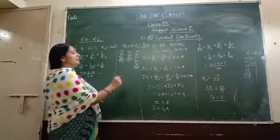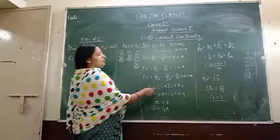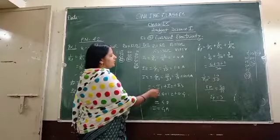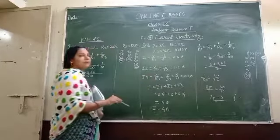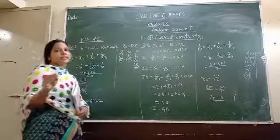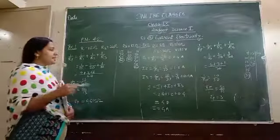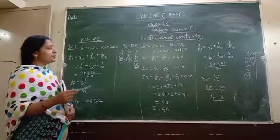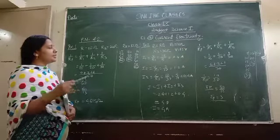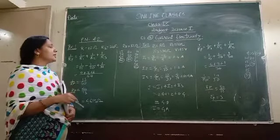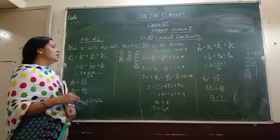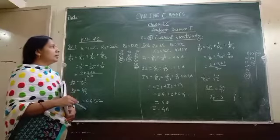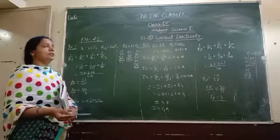Now we find the total current. Total current is equal to I1 plus I2 plus I3, which is equal to 2.4 plus 1.2 plus 0.4. Adding these together, 4 ampere current flows across the whole circuit.